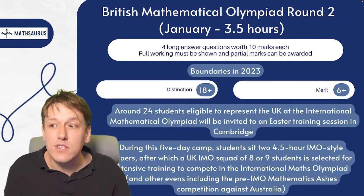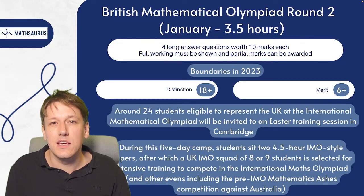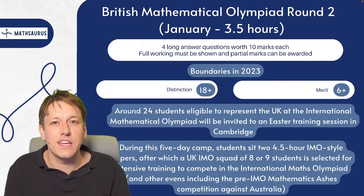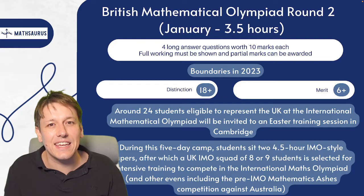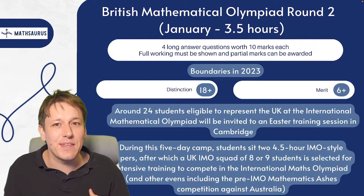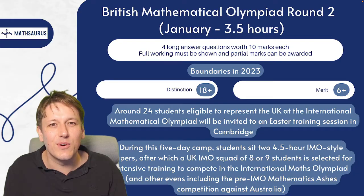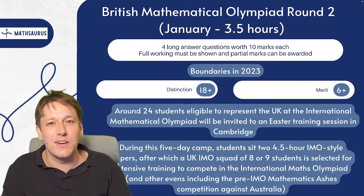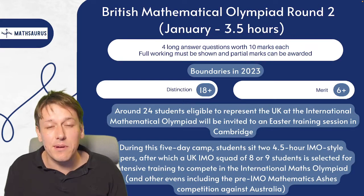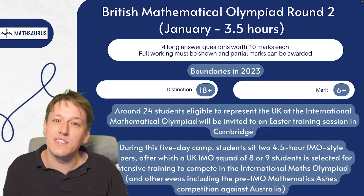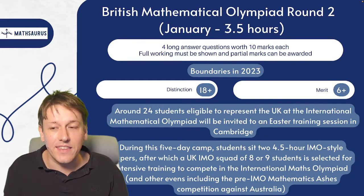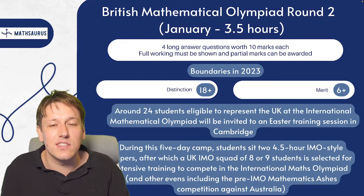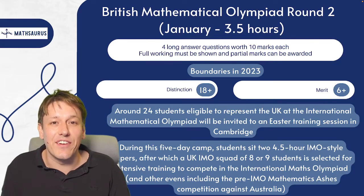Out of BMO round two entrants, about 24 students are chosen who could represent the UK at the International Mathematical Olympiad. They are invited to an Easter training camp in Cambridge where they do two four-and-a-half-hour maths papers plus many other activities and problems. Based on those papers and overall performance, about eight or nine students are selected for intensive year-round training and can then compete in the International Mathematics Olympiad. There is also a pre-IMO Mathematics Ashes competition between the UK and Australia.